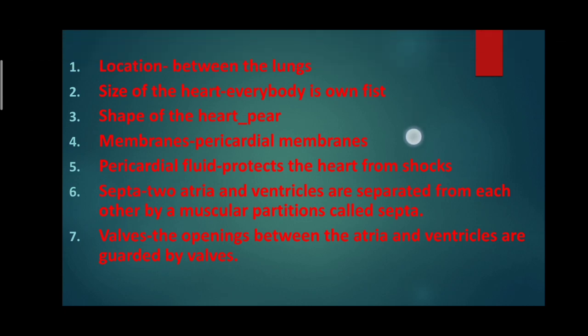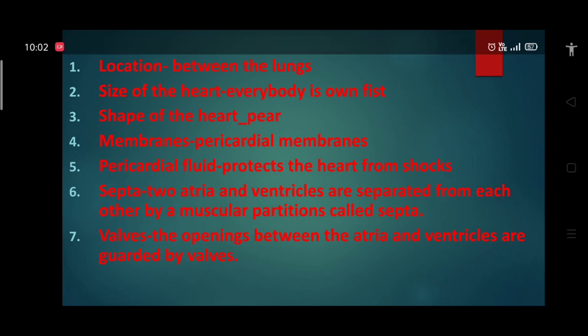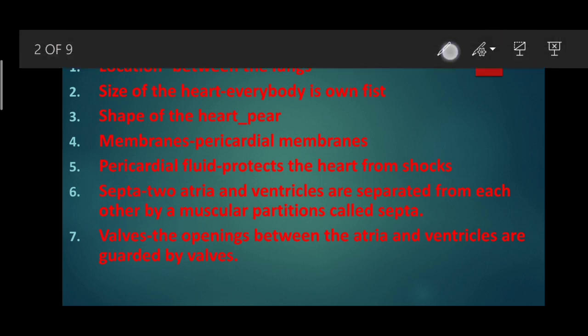The first point is the location of the heart. The heart is present between the lungs, slightly towards the left side, and it is also protected by a rib cage. The size of the heart is approximately your own fist. The shape of the heart is pear-shaped. In your textbook, three organs are given as pear-shaped: the heart, the urinary bladder, and the uterus in the female reproductive system.